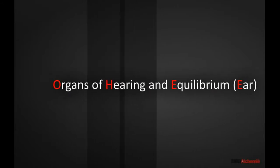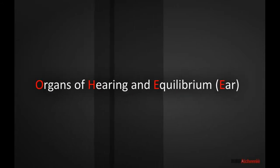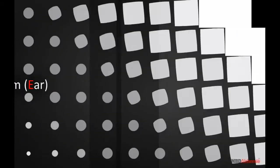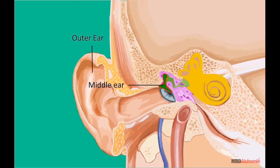Organs of Hearing and Equilibrium. The ear is divided into three main areas: the outer external ear, middle ear, and inner ear.